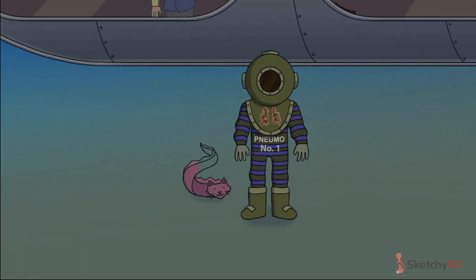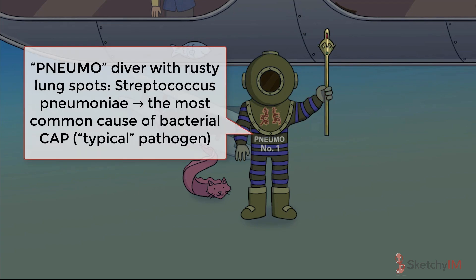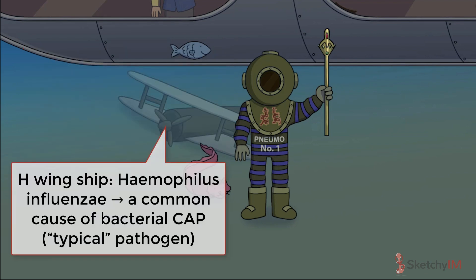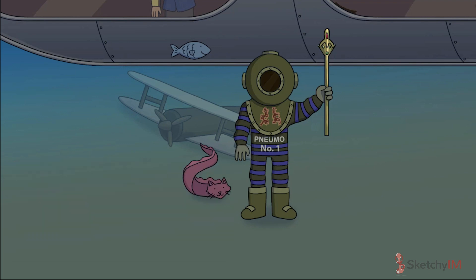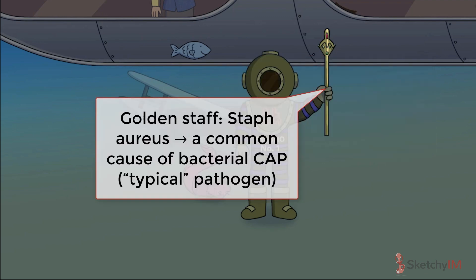Let's introduce the microbes commonly associated with CAP. First up, the so-called typical bacteria. Streptococcus pneumoniae, a gram-positive bacteria, is the most common bacterial cause of CAP, symbolized by the stripy pneumatic suit with infiltrating rusty lung spots — purple for gram-positive. Another common bacterium is Haemophilus influenzae, or H-flu, represented by an H-themed biplane — red for gram-negative. CAP is less commonly caused by Moraxella catarrhalis, embodied by a freaky-looking moray cat eel, also gram-negative. Staph aureus, that gram-positive coccus, is also a less common but important cause of CAP, symbolized here by the golden staff.